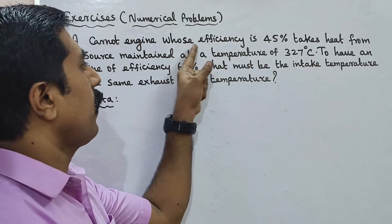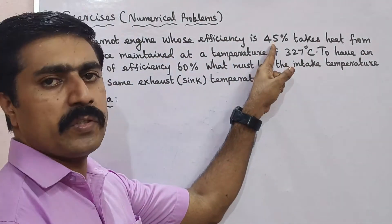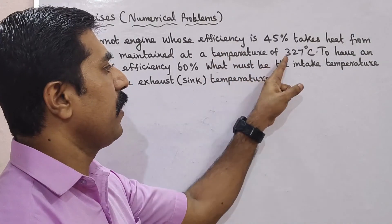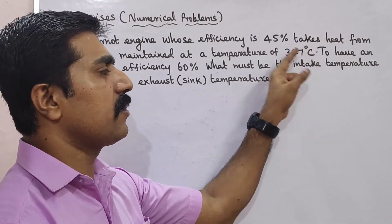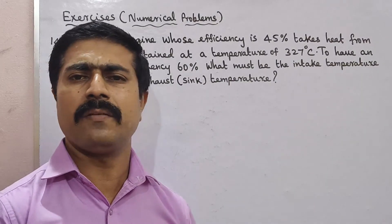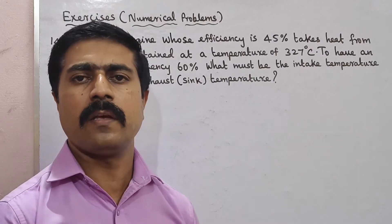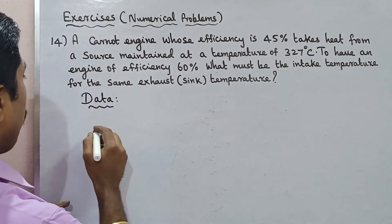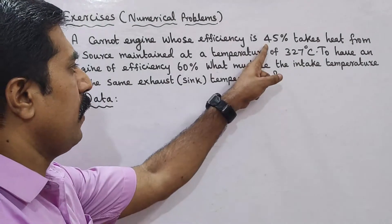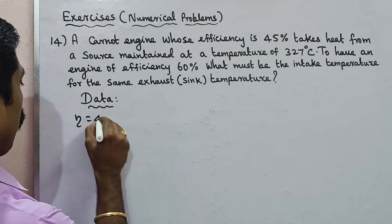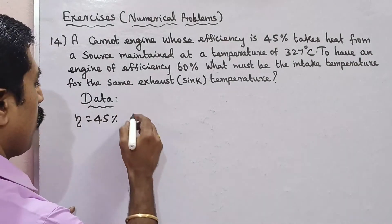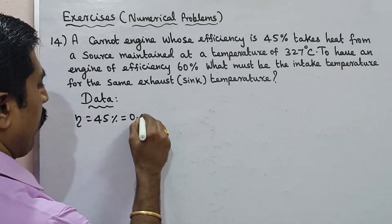First, the given data: efficiency eta₁ is equal to 45%, and as a fraction divided by 100, that is 0.45. The heat source temperature TH1 is 327 degrees Celsius.